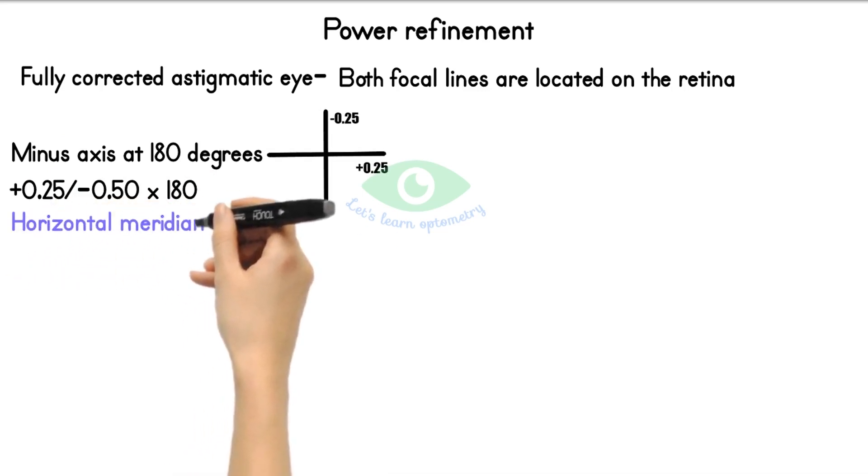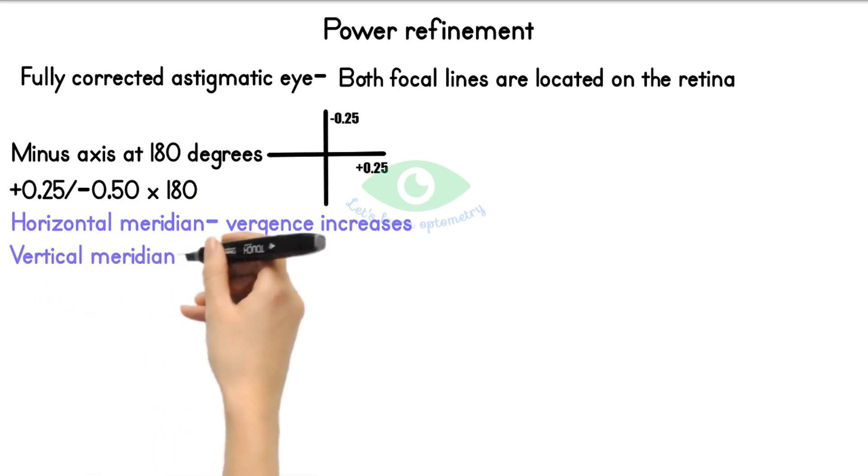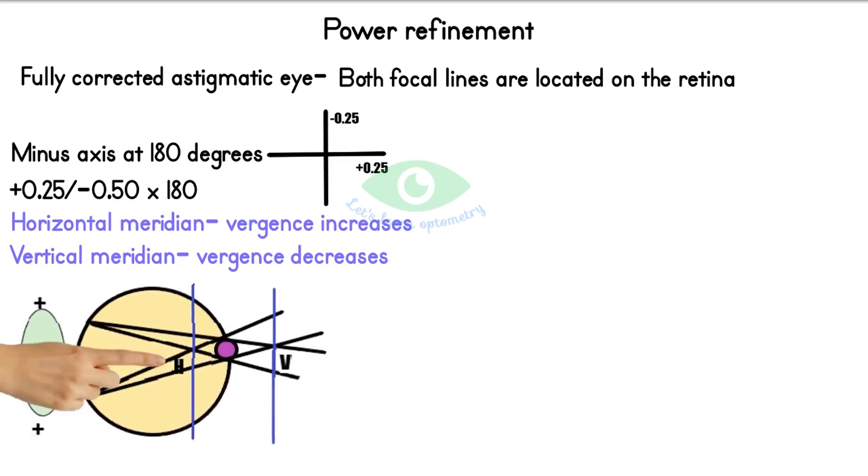The vergence of the horizontal meridian increases and the light rays get focused in front of the retina. The vergence of the vertical meridian decreases and the light rays get focused behind the retina. The circle of least confusion is located on the retina.